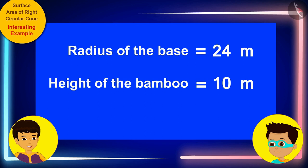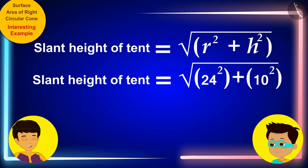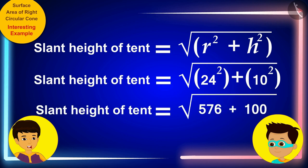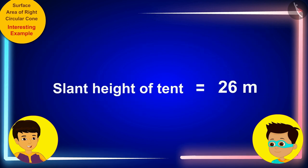Okay, let me quickly solve this problem by writing these values in this formula instead of r and h respectively. Look Thomas, the oblique or slant height of the tent is 26 meters.